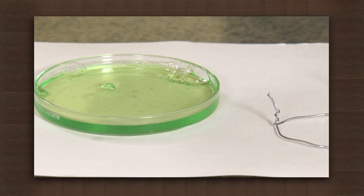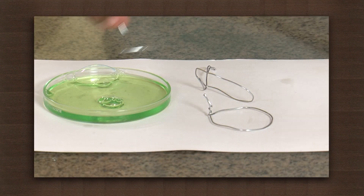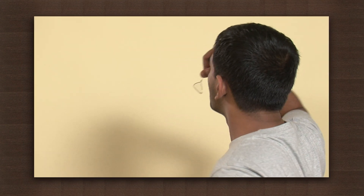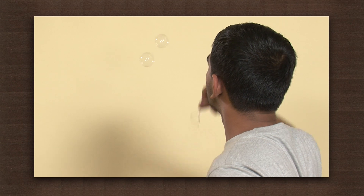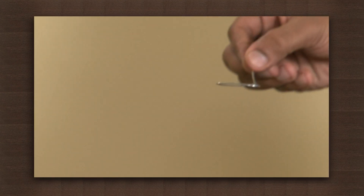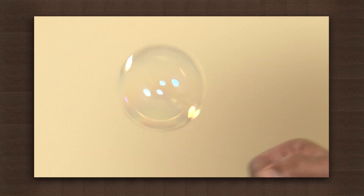Now let us take this irregular shaped loop and make an irregular bubble. No luck — it is still round. We will try with a triangular loop. Still no luck. So we just saw that irrespective of the shape of loop we used, the bubble always came out round.